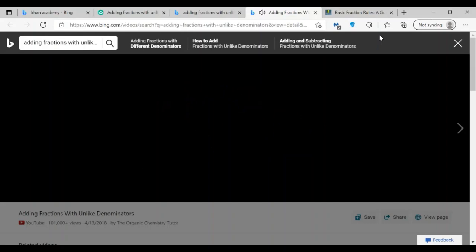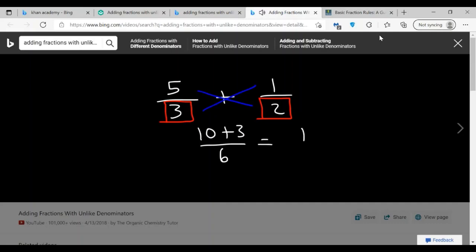Now let's try another example: five over three plus one over two. Three times two is six. Cross multiply: five times two is ten, and three times one is three. Then add ten plus three to get thirteen. So the answer is 13 over 6.